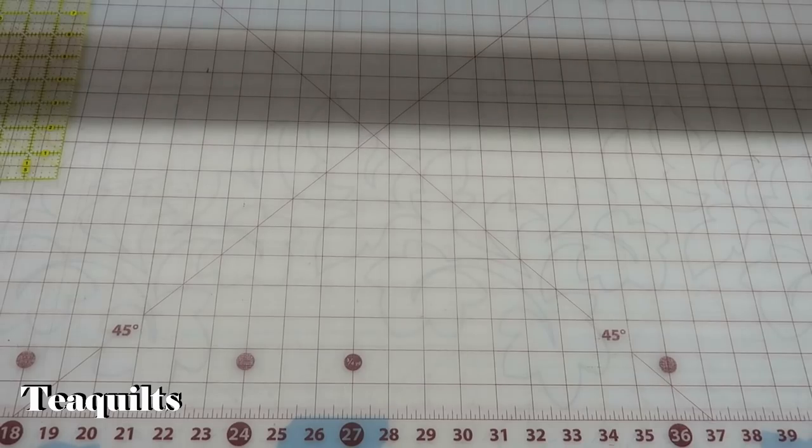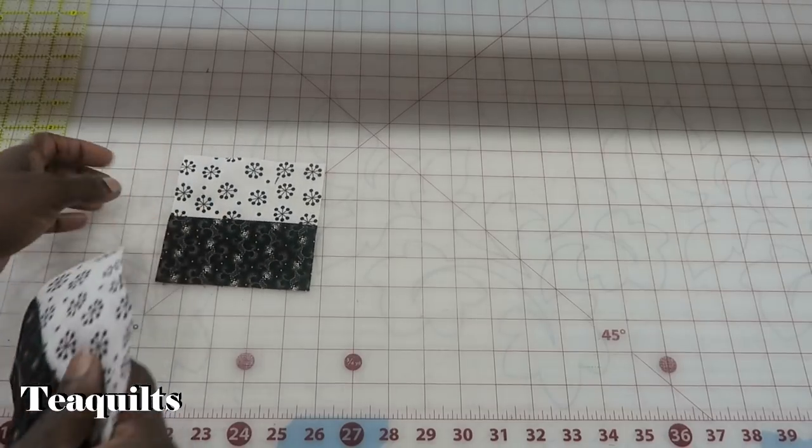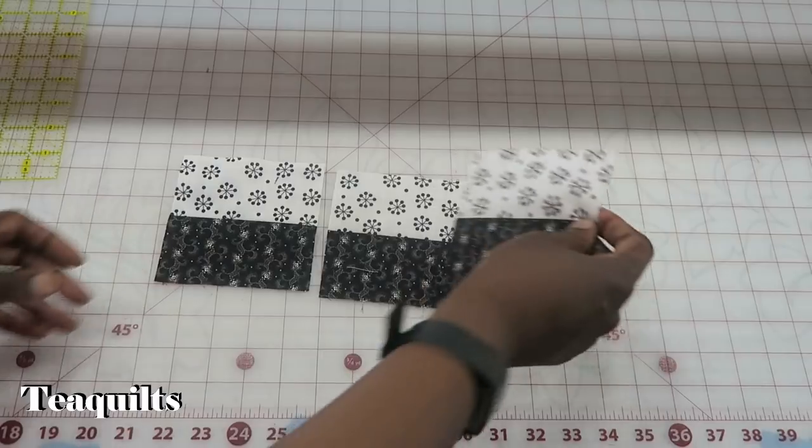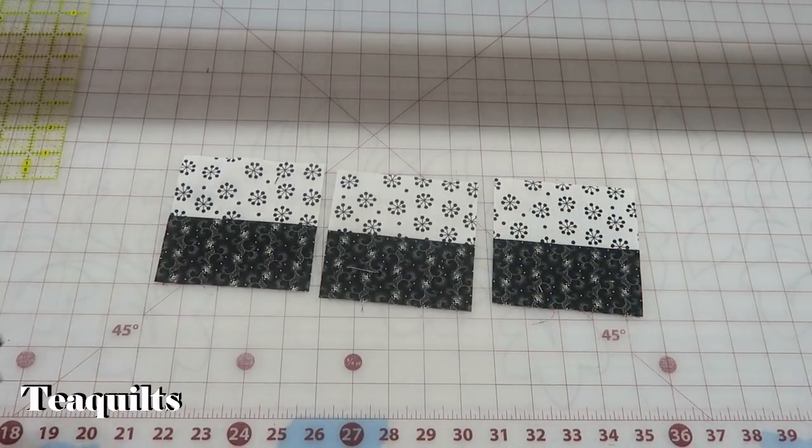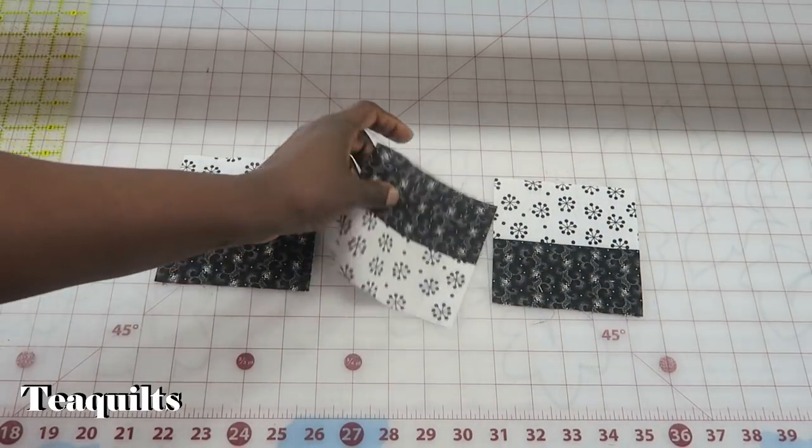So the next step is that we need to sew these units back to each other but we just need to rotate one. So if we just cut this off of our strip set all we need to do is just rotate one of these.